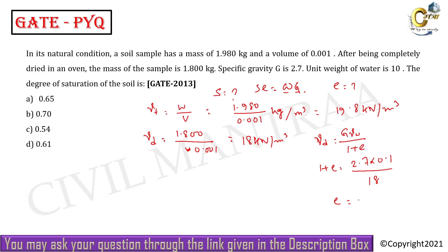So what is the value of S? S equals wG by e, right? So S will be w into G, that is 0.1 into 2.7 by e, which is 0.5. If you calculate, S value becomes 0.54, that is 54 percent. So C is the right answer.